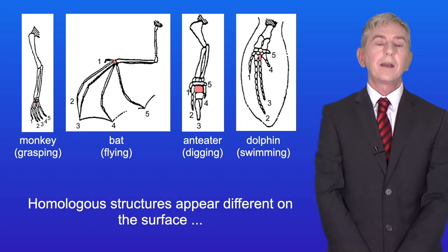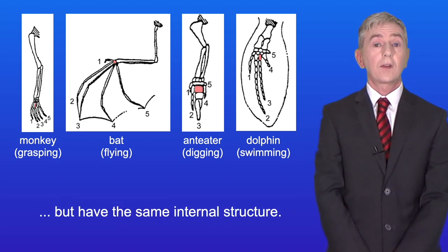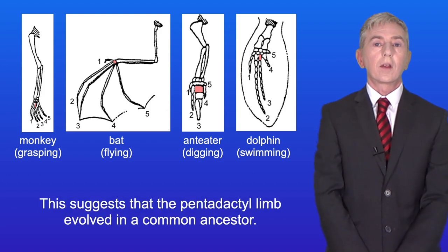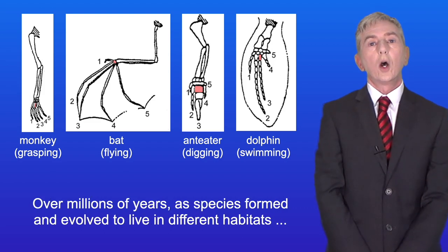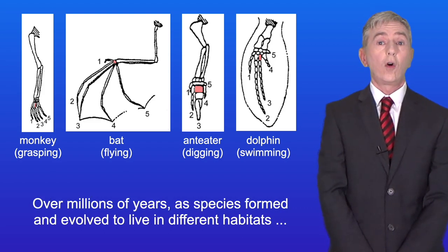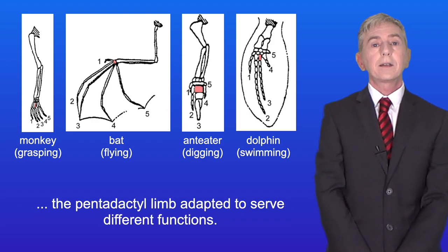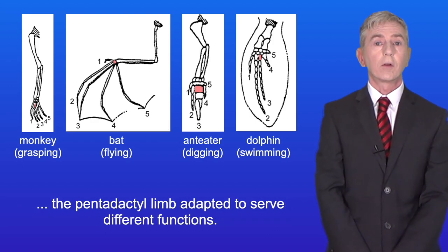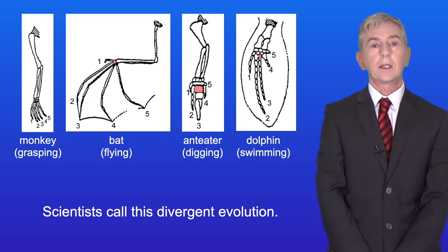Homologous structures appear different on the surface but have the same internal structure. This suggests that the pentadactyl limb evolved in a common ancestor. Over millions of years, as species formed and evolved to live in different habitats, the pentadactyl limb adapted to serve different functions, and scientists call this divergent evolution.